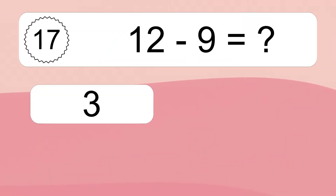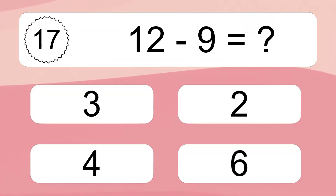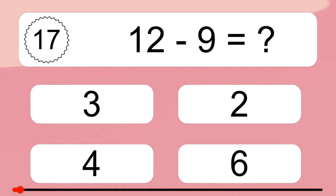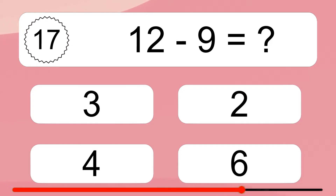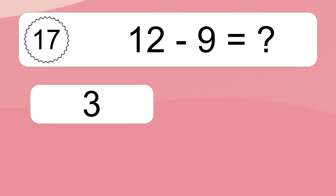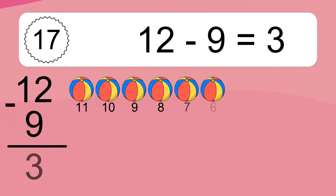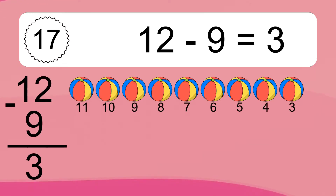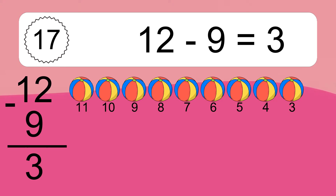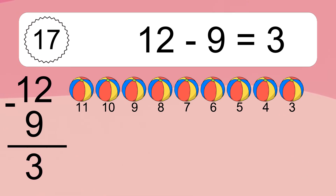12 minus 9 equals what? 12 minus 9 equals 3. Let's count it: 11, 10, 9, 8, 7, 6, 5, 4, 3.